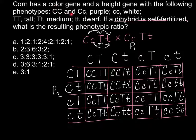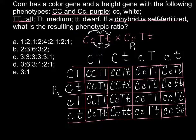As you can see, capital C capital C, and capital C small c (homozygous dominant and heterozygous) means purple, while small c small c means white. Capital T capital T (homozygous dominant) means tall, heterozygous (Tt) means medium, and homozygous recessive (tt) means dwarf. We will use this information to find all the possible phenotypes.